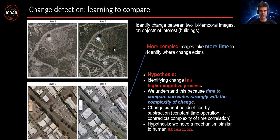The first is that identifying change is a higher cognitive process. We know this because in psychology people have done experiments and when we try to identify change between images which are more complex, usually takes more time in comparison with simpler objects.